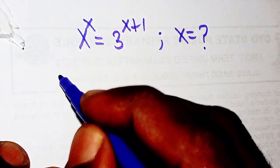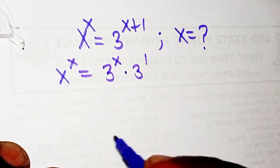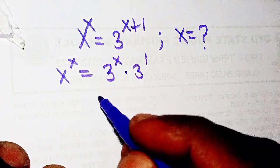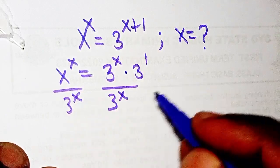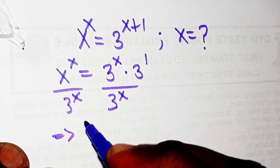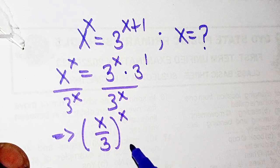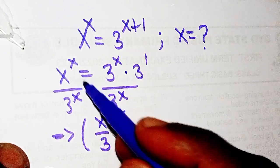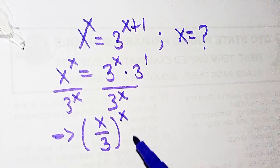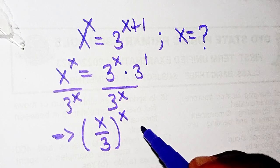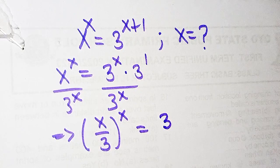I'm going to translate this equation like this: x^x equals — I will split this as 3^x multiplied by 3^1, from the law of indices. From there I can divide through by 3^x, which implies the left-hand side can be written as (x/3)^x, because the two terms share the power x. That equals 3, after cancellation.